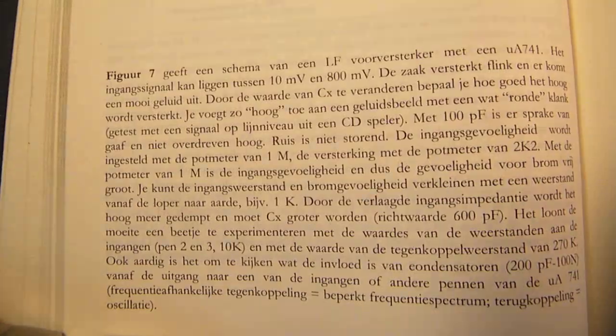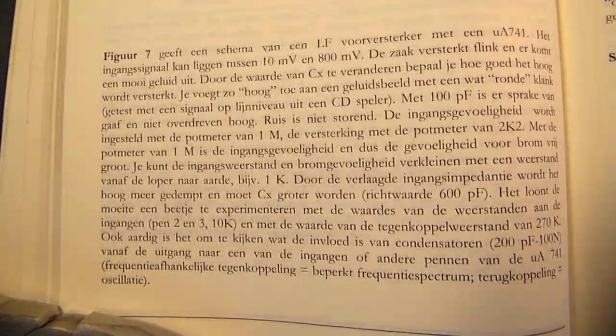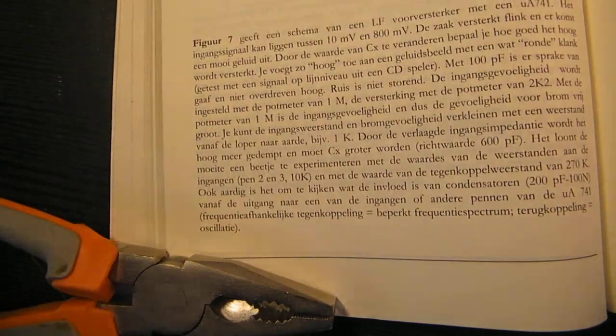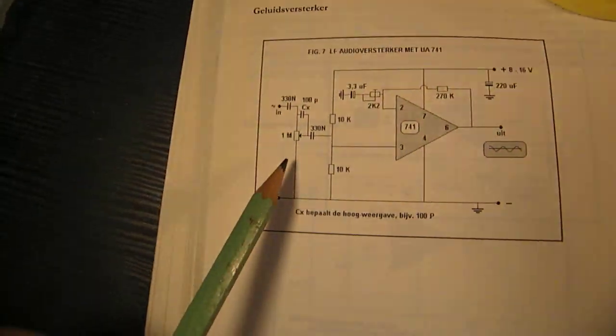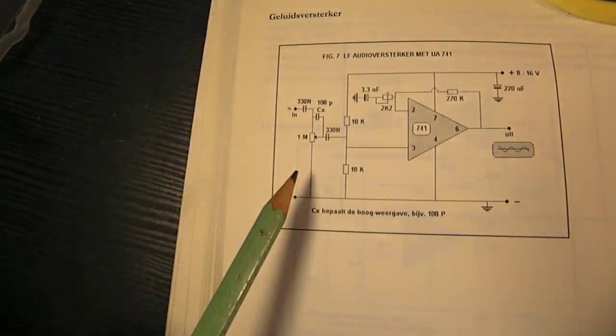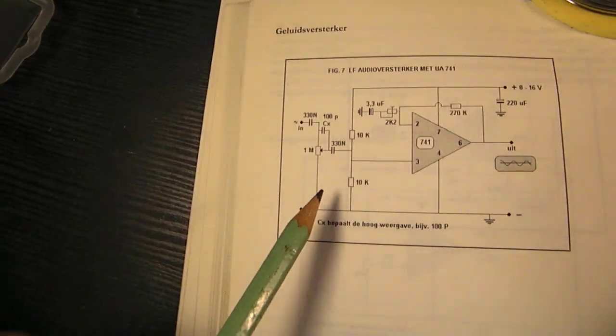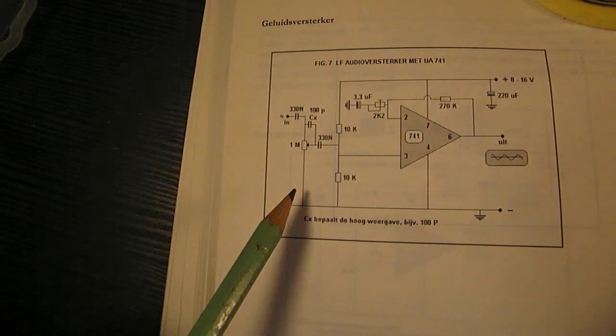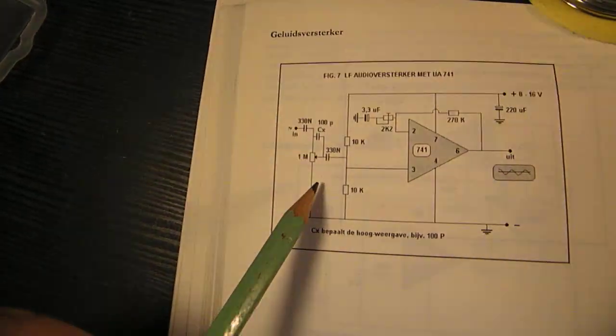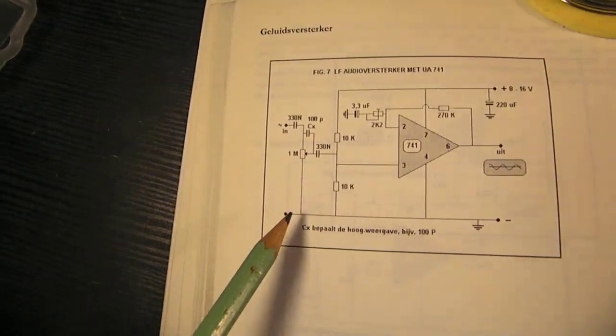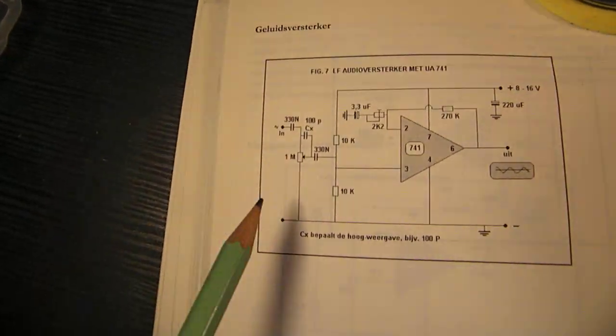For people that can read Dutch, this is the corresponding text. You can use a 1 mega ohm potentiometer but also a 10k potentiometer. Of course, with a 1 mega ohm potentiometer the sensitivity to hum is higher.